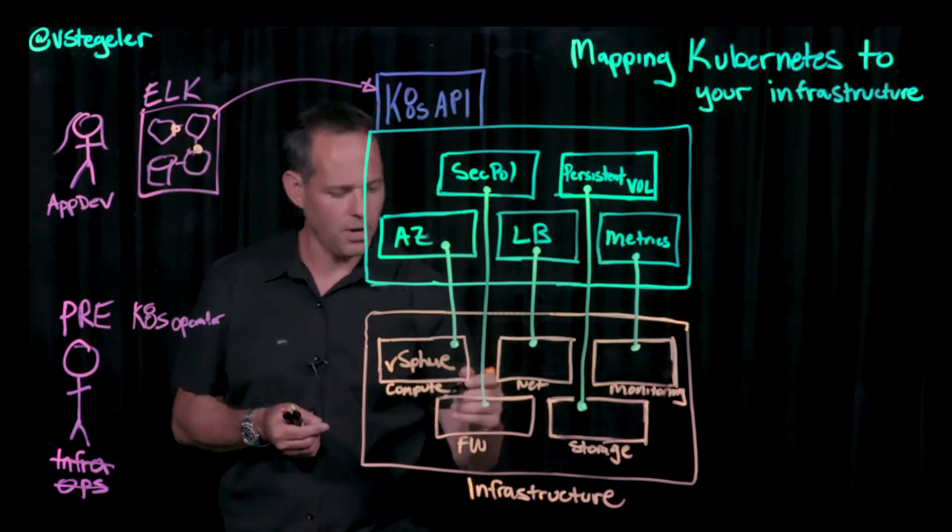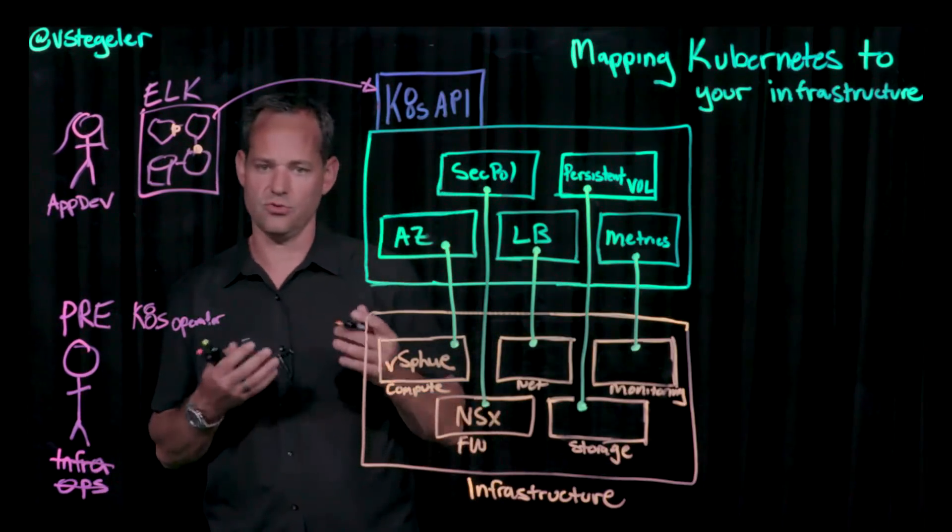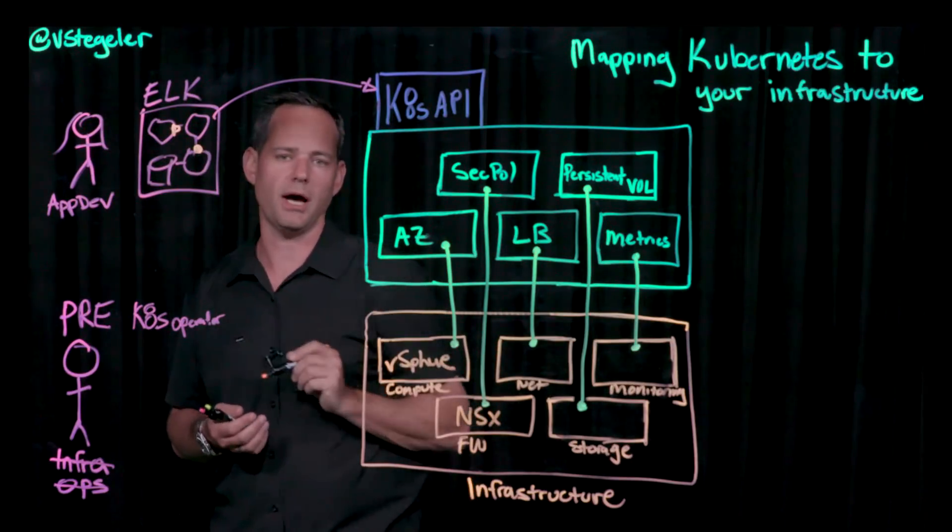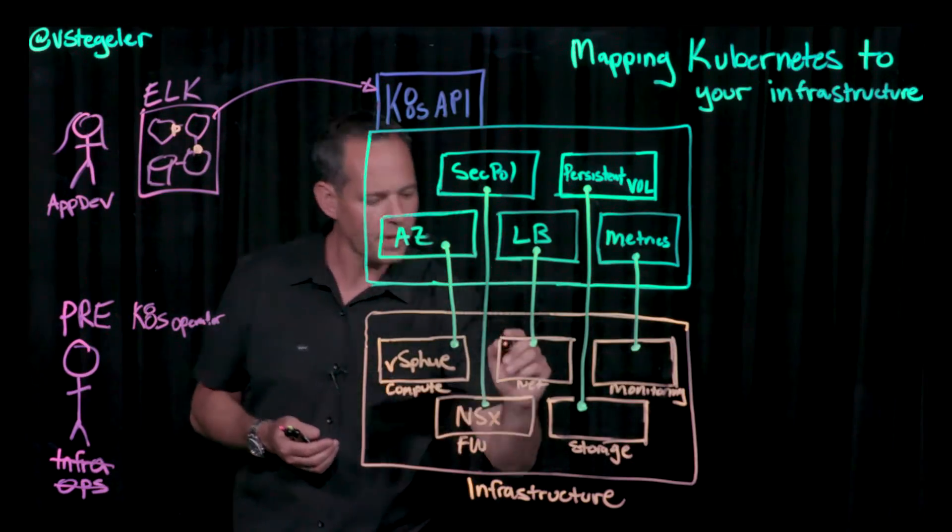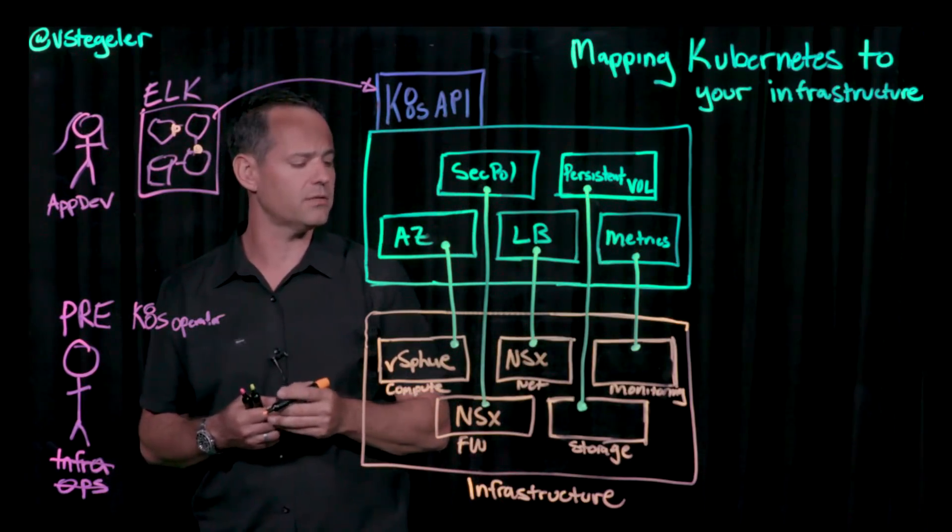When I look at security policy, those will get translated into the NSX distributed firewall. We'll be able to provide micro segmentation down to the pod level within Kubernetes. Load balancing, same thing. It's NSX. We're going to leverage the NSX load balancer.